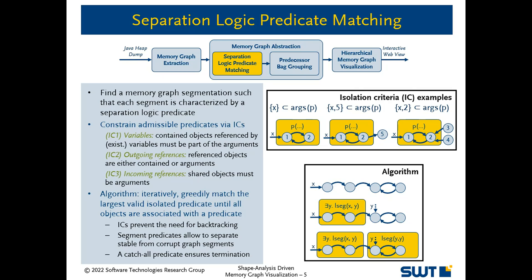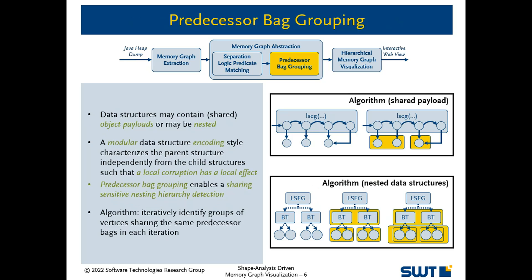For example, consider the panhandle list in the bottom right, where our approach first identifies the initial acyclic list segment and then identifies the cyclic remainder. A data structure may contain complex object payloads or may even contain nested data structures such as a list of binary trees.